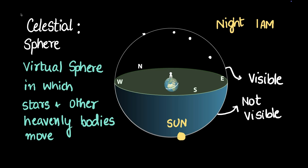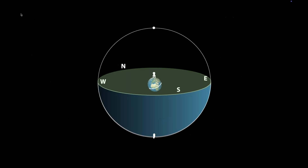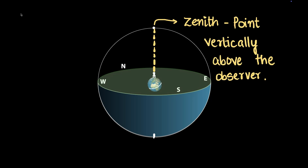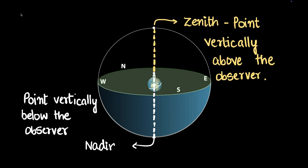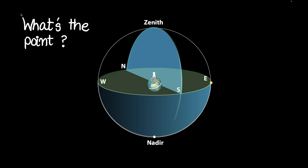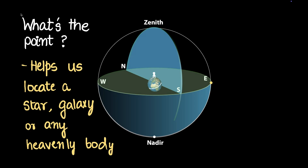We're going to dive into this topic and it's going to be a little technical, so gear up. Here are two important points to discuss. Right above your head when you look up — whether it's day or night — that point on the celestial sphere is called the zenith. The zenith is the point vertically above the observer. Opposite to this, vertically below the observer on the celestial sphere, is a point called the nadir. All of this helps us locate a star, a galaxy, a planet, or any other heavenly body.